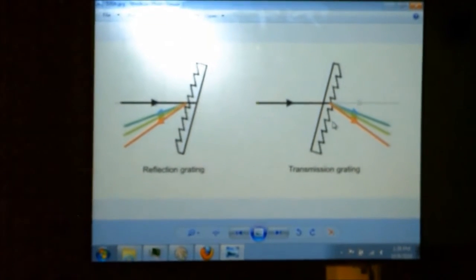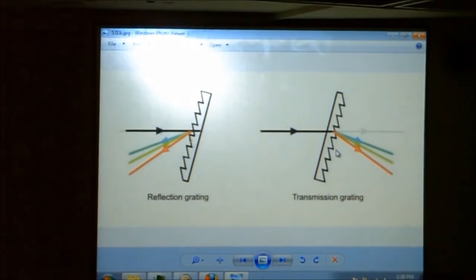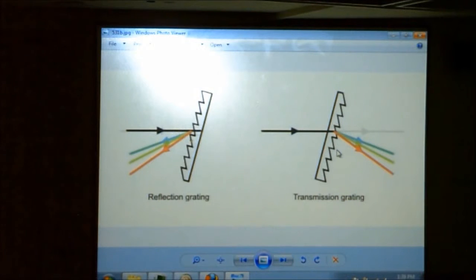And you also have reflection gratings. It's the opposite of transmission. We've got transmission on the right there. There's a relief grating. Here we have reflection. Same idea. You just etch into it and you bounce the light off of it. What comes off will also be an interference pattern where the first order will be dispersed throughout the colors.